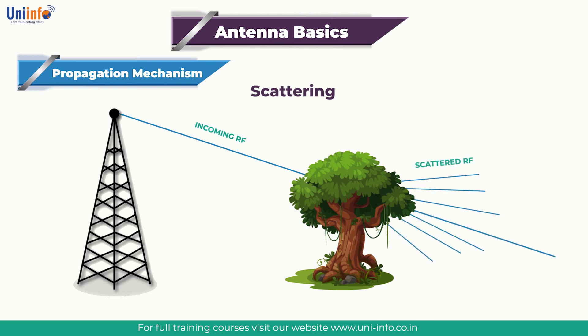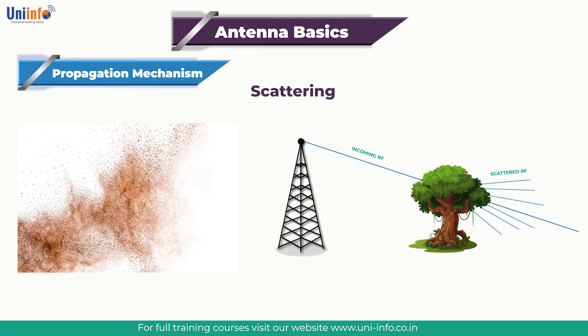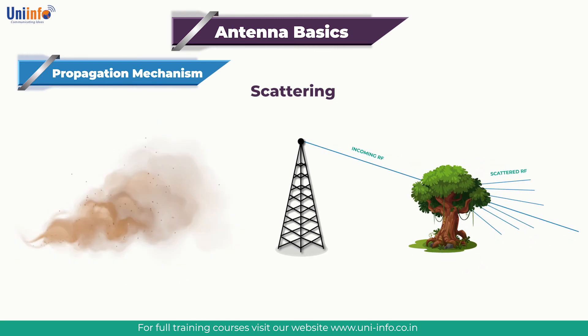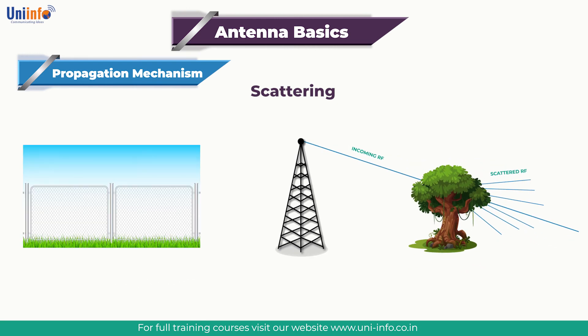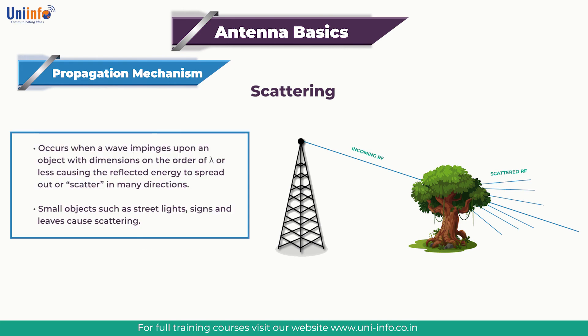Next is scattering. Scattering is when an RF wave encounters an object and scatters into multiple waves. Some examples of common objects that cause scattering include dust, smog, humidity, and chain-link fences. If a signal has been scattered, the integrity and strength of the signal will suffer tremendously.